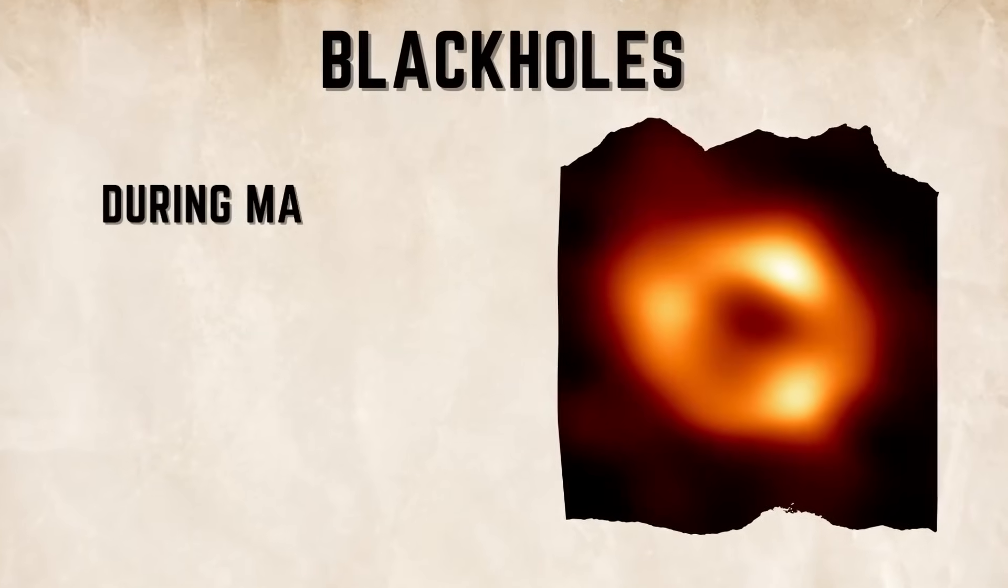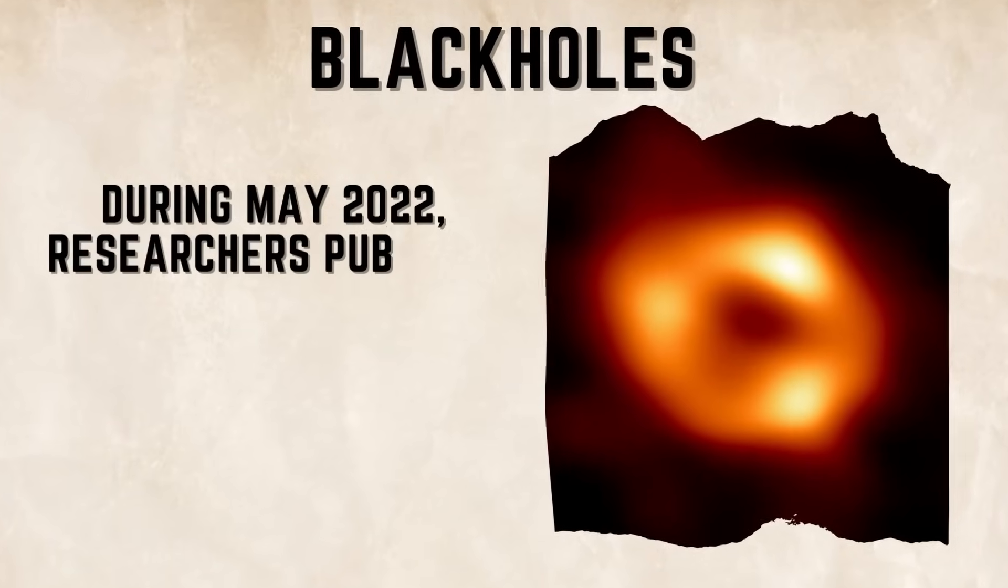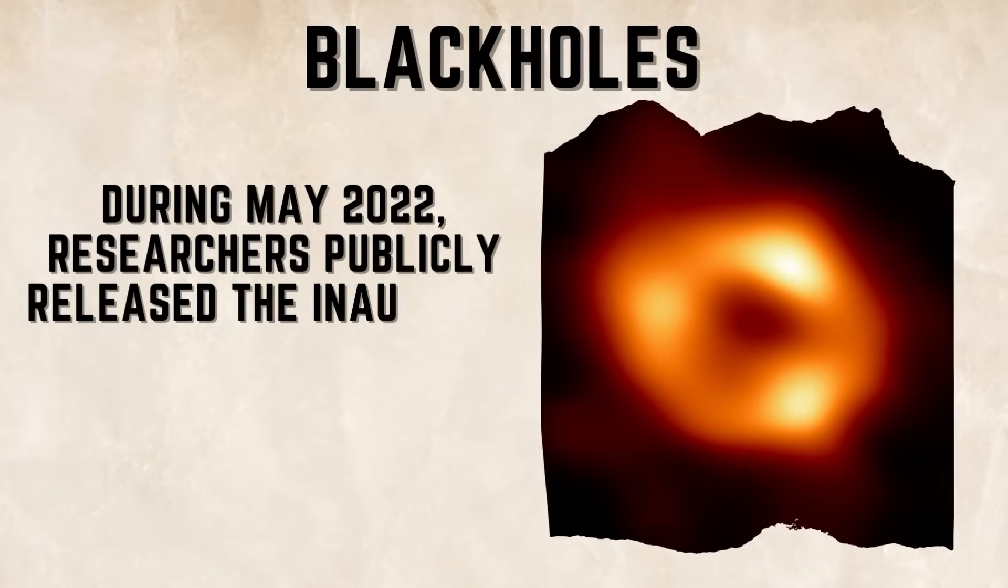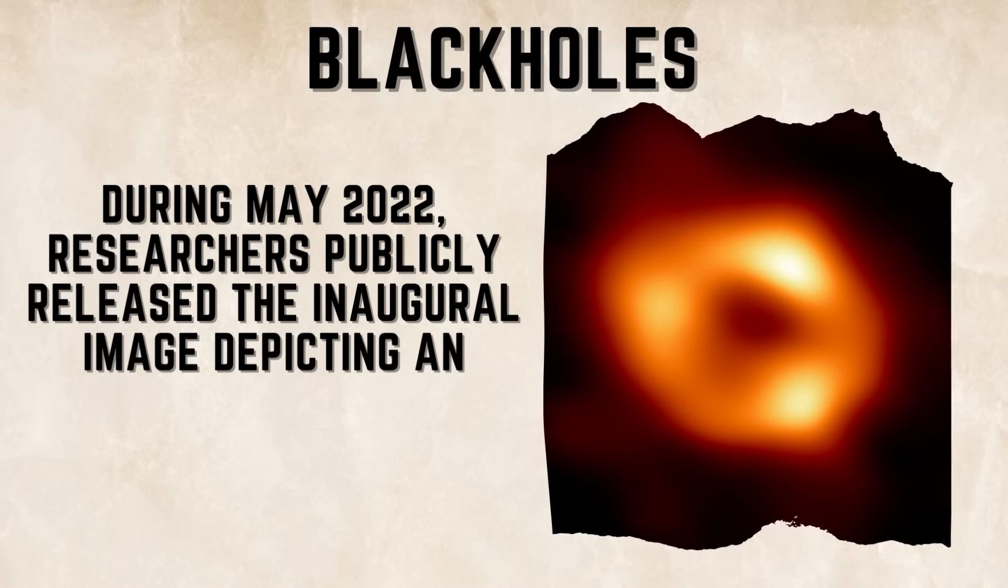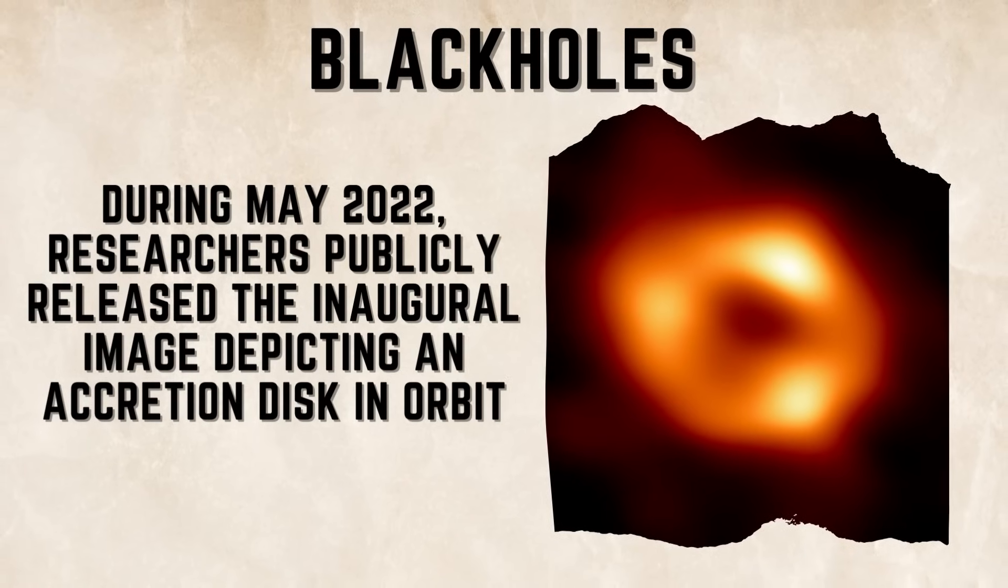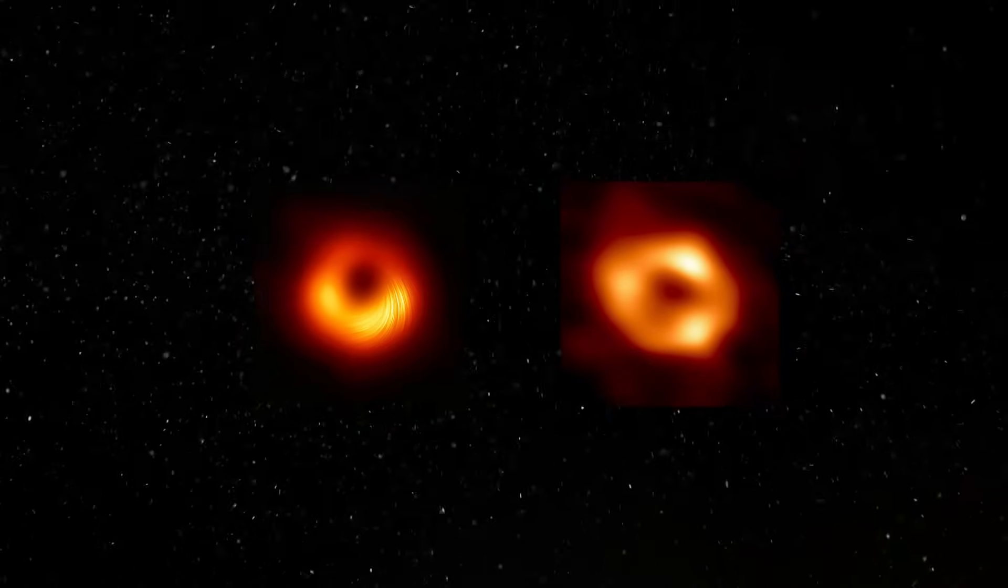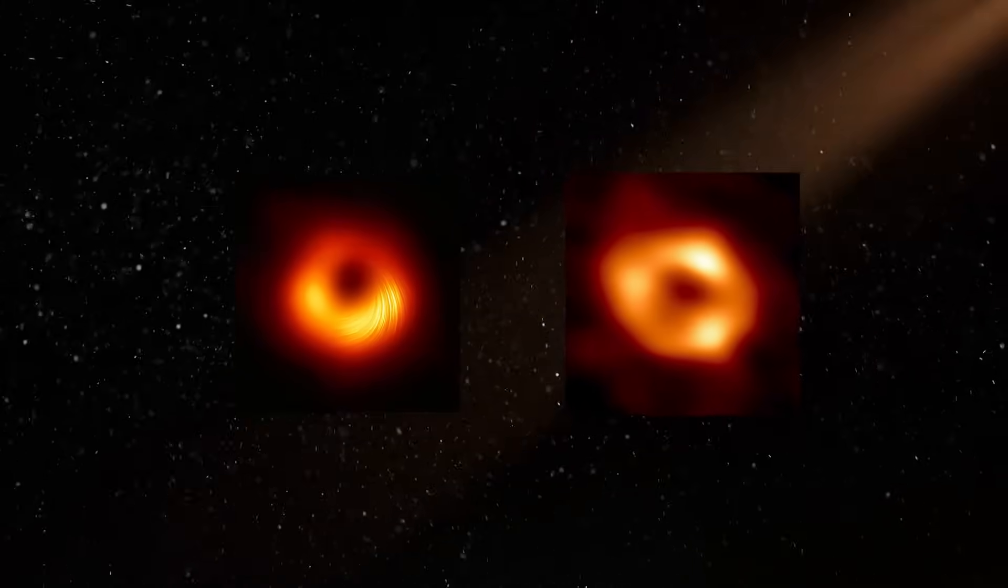In May 2022, scientists shared the first-ever picture of the swirling material called an accretion disk around Sagittarius A star, which is also believed to be a black hole. This was the second confirmed image of a black hole.